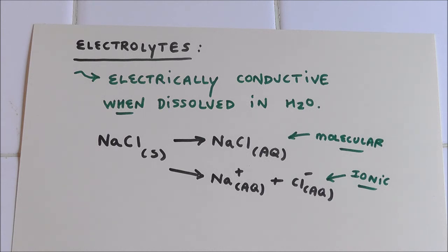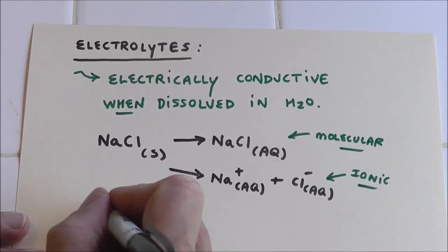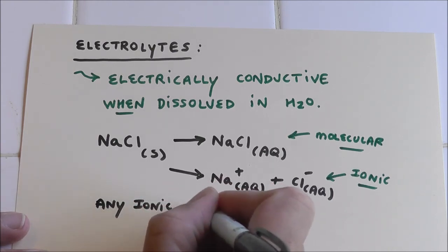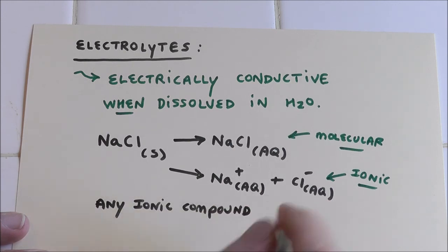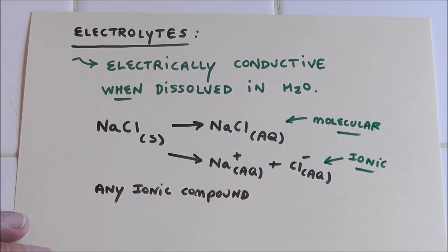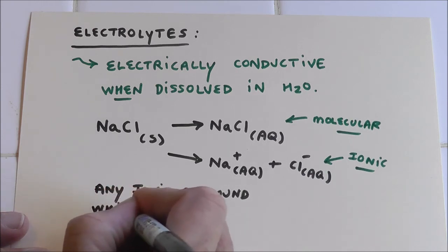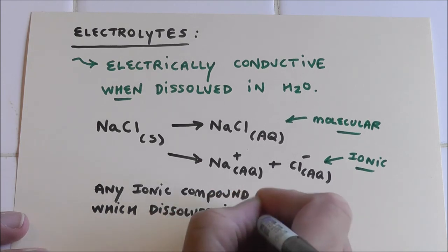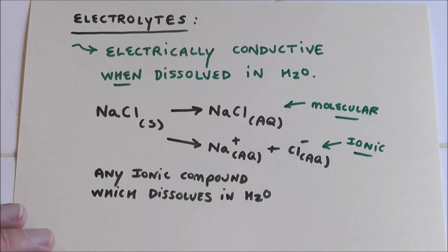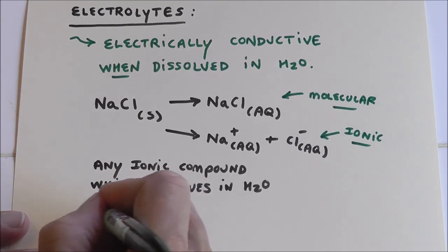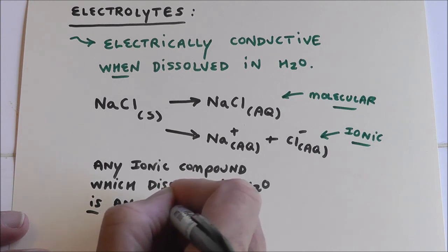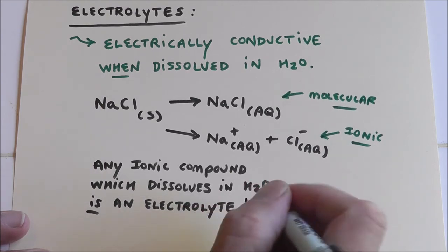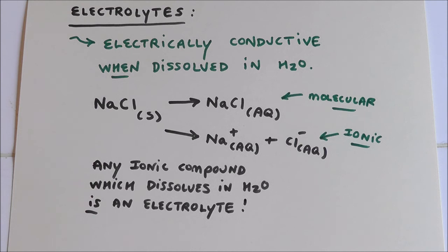So what is an electrolyte? An electrolyte is or includes any ionic compound. Now pay attention here. This is pretty important. Any ionic compound which dissolves in water is an electrolyte. Now you might say, well, does everything dissolve in water? Nope. That's what we're going to talk about next. Not everything dissolves in water that is an ionic compound. Some things don't.